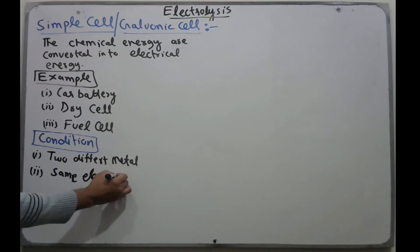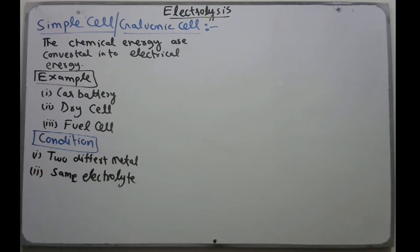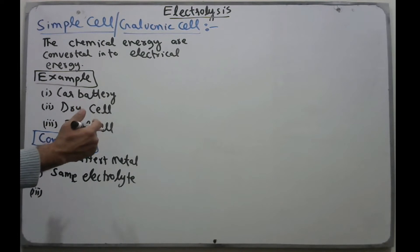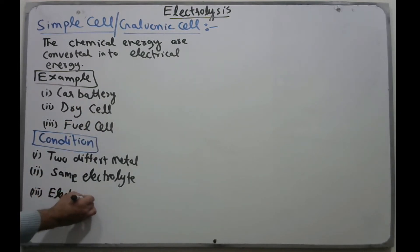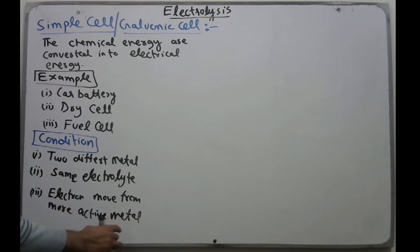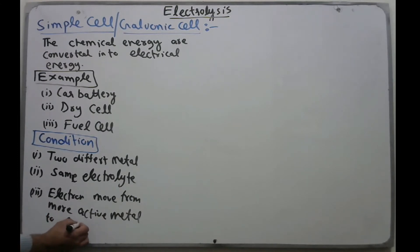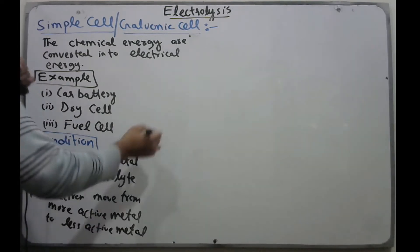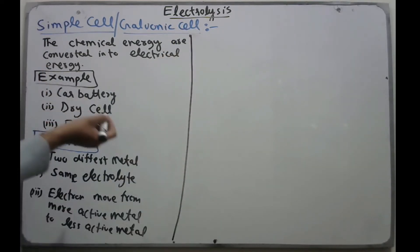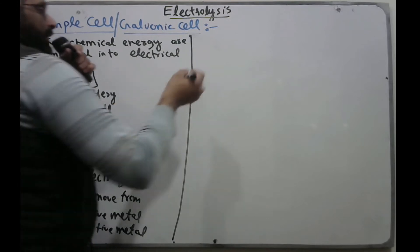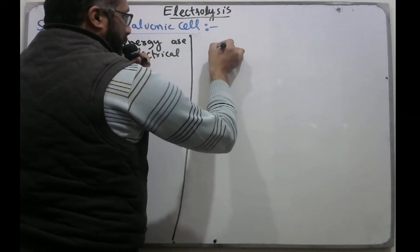The second condition is to use the same electrolyte for both metals. The third condition: electrons move from the more active metal to the less active metal. The more active metal acts as the anode and the less active as the cathode. Now we draw a diagram for simple or galvanic cells.